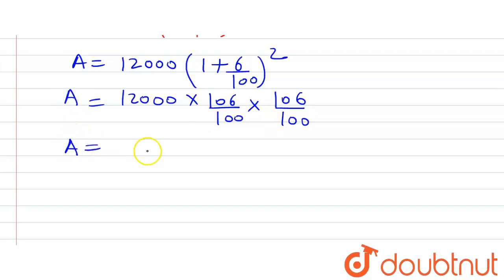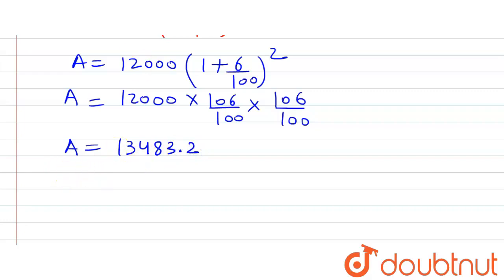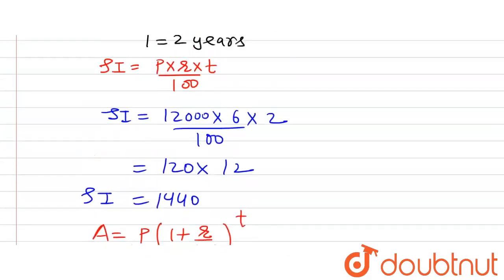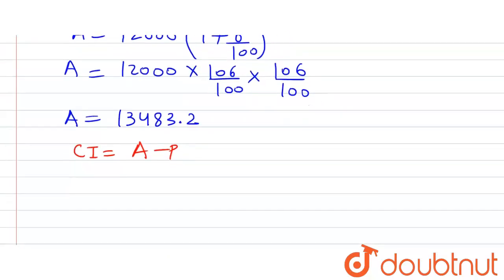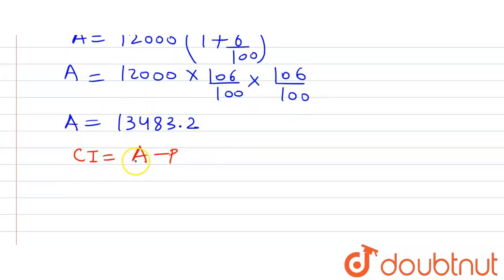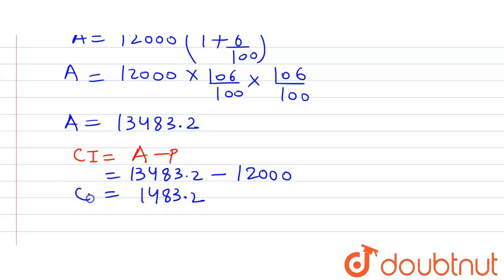On simplifying, the amount equals 13,483.2. The formula for compound interest is CI = Amount − Principal. So CI = 13,483.2 − 12,000, which equals 1,483.2. This is the compound interest.